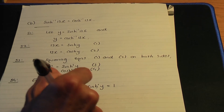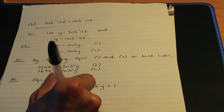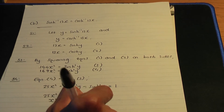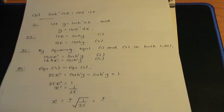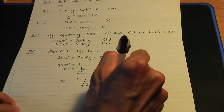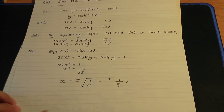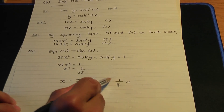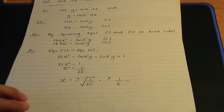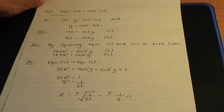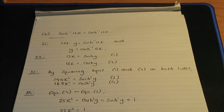As a result, 25x squared equals one, so x squared equals one over 25. Taking the square root of both sides gives x equals plus or minus one over five. There are two values: a positive and a negative value of x. So here are the steps again to solve an equation of this type. I hope you found this video helpful, and I hope to see you in the next video. Thank you.